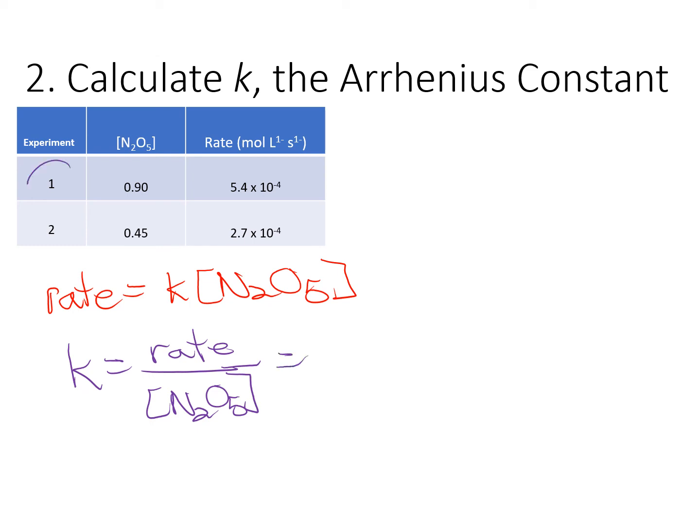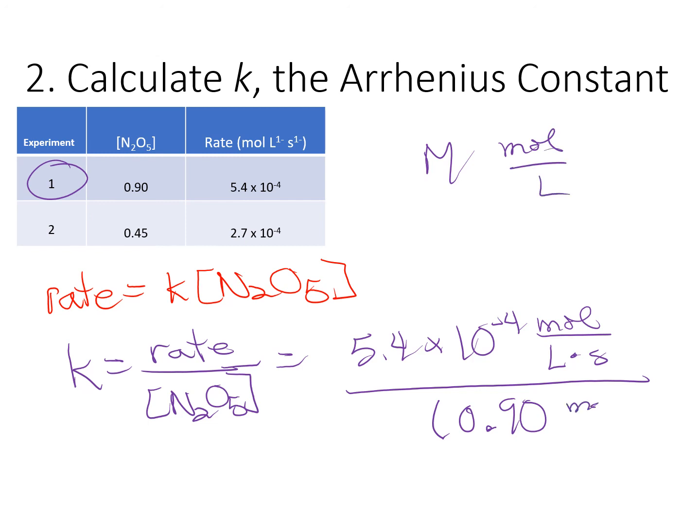Let's use experiment one. The rate is 5.4 times 10 to the minus fourth. Now units are really important for K and they can get really complicated, so don't skip writing them in your calculation. Rate is always moles per liter per second. Concentration is always moles per liter, and this one's raised to the first power. So my concentration is 0.90. I'm going to write moles per liter instead of molarity so that it looks exactly the same.